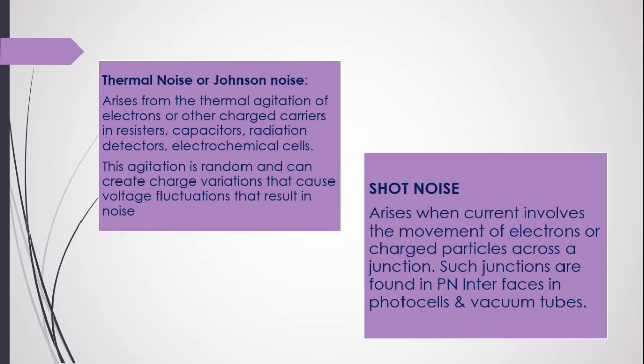The second type of instrumental noise is shot noise. It arises when current involves the movement of electrons or charged particles across a junction. Such junctions are found in PN interfaces, photocells, and vacuum tubes. Shot noise is particularly relevant in capacitors, alongside thermal noise and Johnson noise, especially where junctions are used.